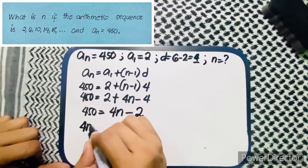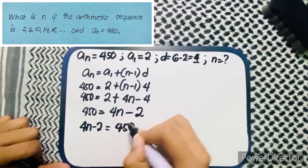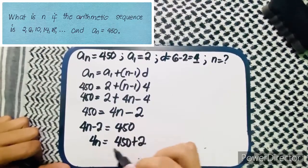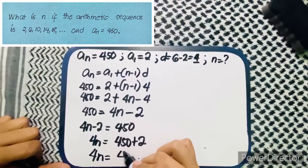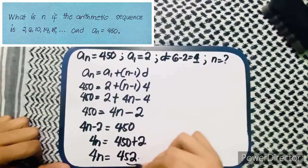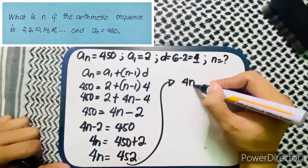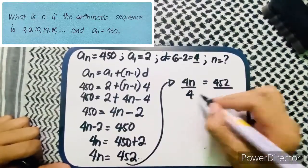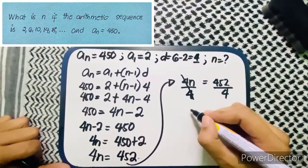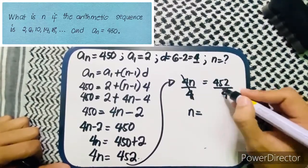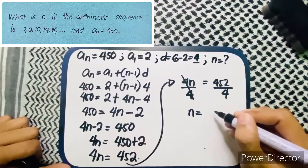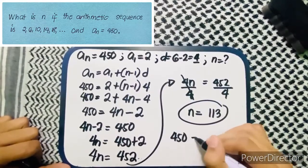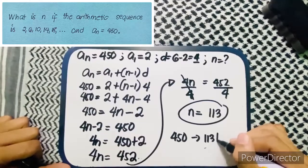We can write 4n minus 2 equals 450, so 4n equals 450 plus 2 which is 452. Divide both sides by 4: n equals 452 divided by 4, which is 113. So 450 is the one hundred thirteenth term.